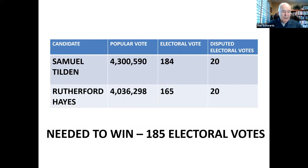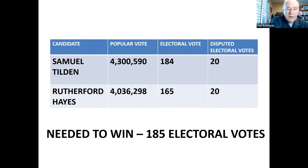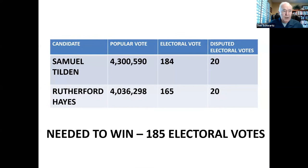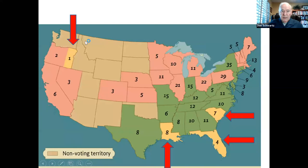After all, Tilden had a quarter of a million more votes than Hayes. However, the election was deadlocked because the 184 electoral votes that Tilden had won was one short of the required majority — he needed 185. Four states had disputed election returns: Oregon, South Carolina, Louisiana, and Florida. Collectively, those four states had 20 electoral votes: the eight of Louisiana, the four of Florida, the seven of South Carolina, and one of the three electoral votes in Oregon.